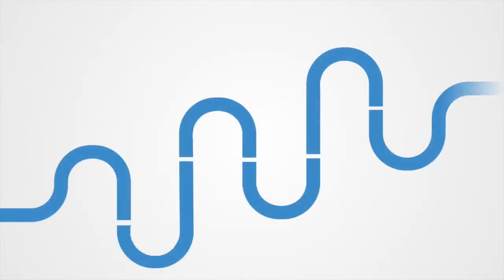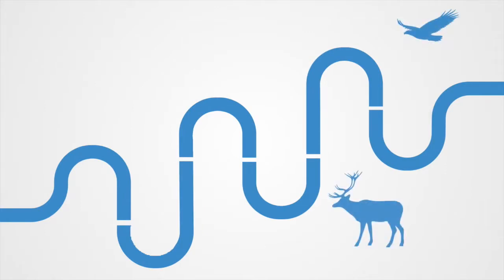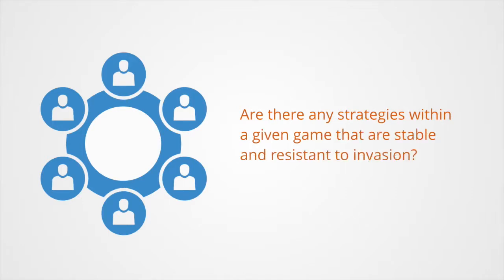This illustrates clearly the dynamic nature to the success of strategies within games. Because evolutionary games are dynamic, meaning that agent strategies change over time, what is best for one agent to do often depends on what others are doing. It is then legitimate for us to ask, are there any strategies within a given game that are stable and resistant to invasion?